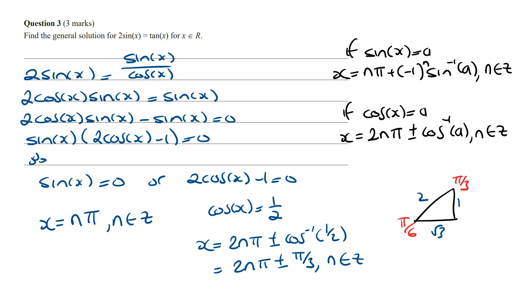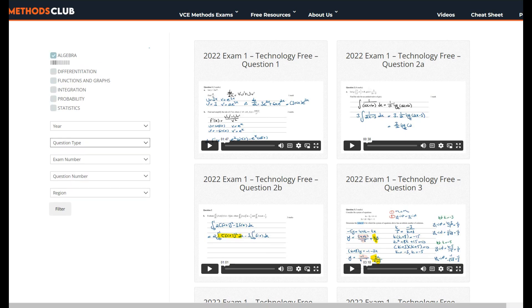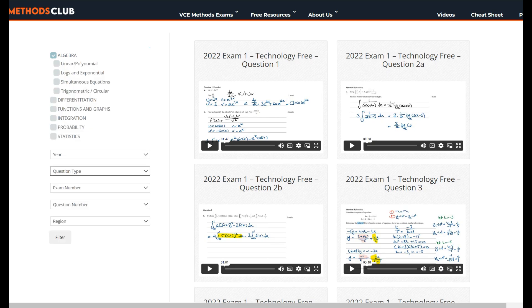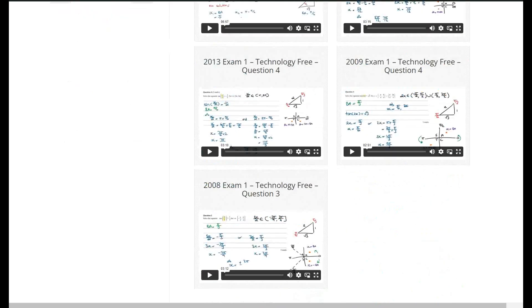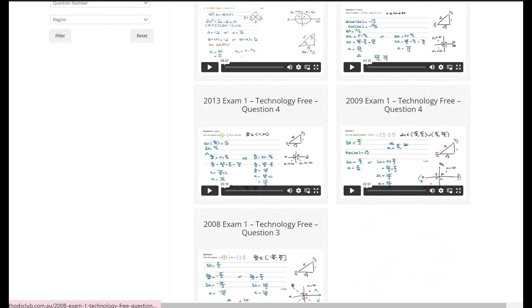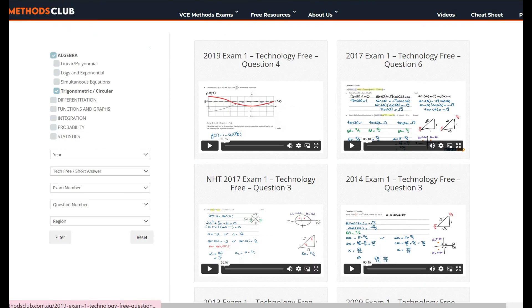If you guys want to learn exam style questions similar to this one, then join the maths methods club where you can group past maths methods exam questions by topic. All you have to do is click on algebra from the main topics and then from the subtopics select trigonometric or circular. Go to question type, select tech free and then click on filter. This is then going to instantly group all the past maths methods exam questions related to this topic. Try out these questions and see how you go, and if you get stuck you can just watch the solutions. Good luck and I'll see you guys in the next video.